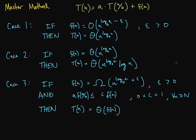In Case 3, if f(n) is Big-Omega of n to the log base b of a plus some positive epsilon, and a·f(n/b) is less than or equal to some constant c·f(n) for c between zero and one and for large enough n, then T(n) is Big-Theta of f(n).